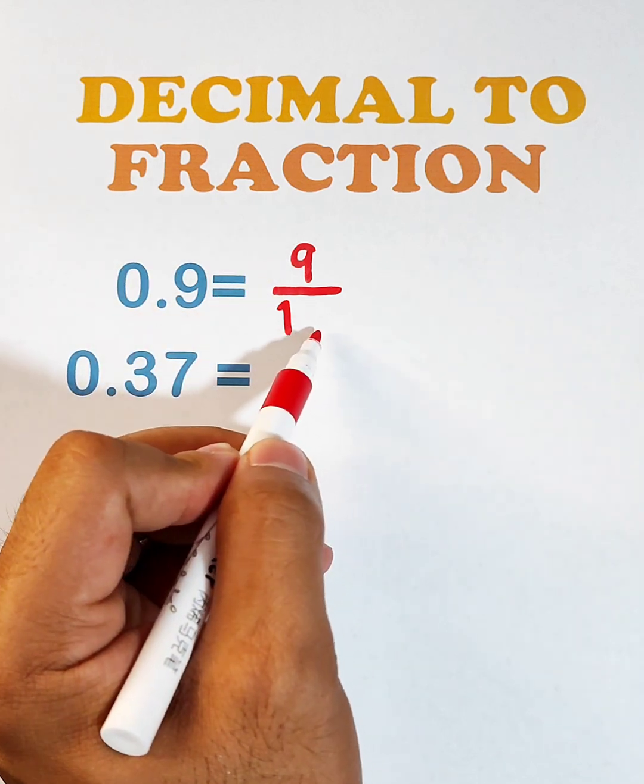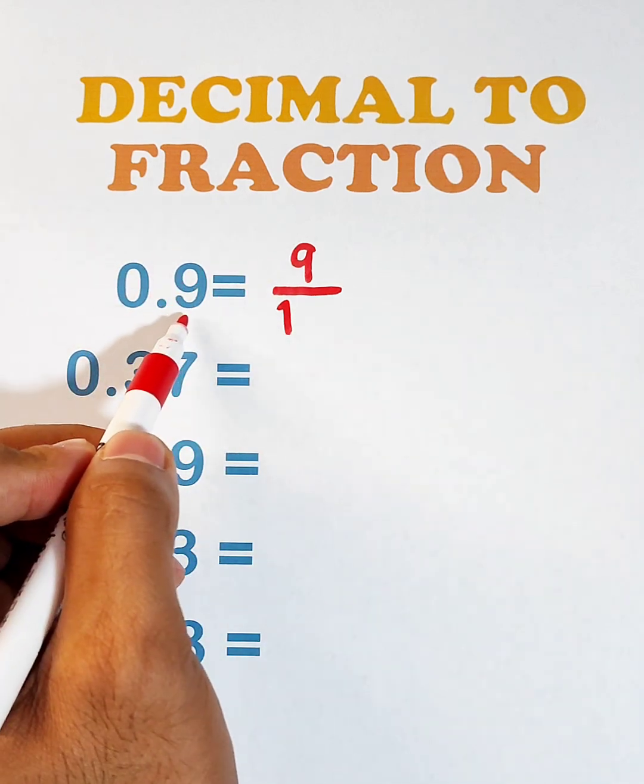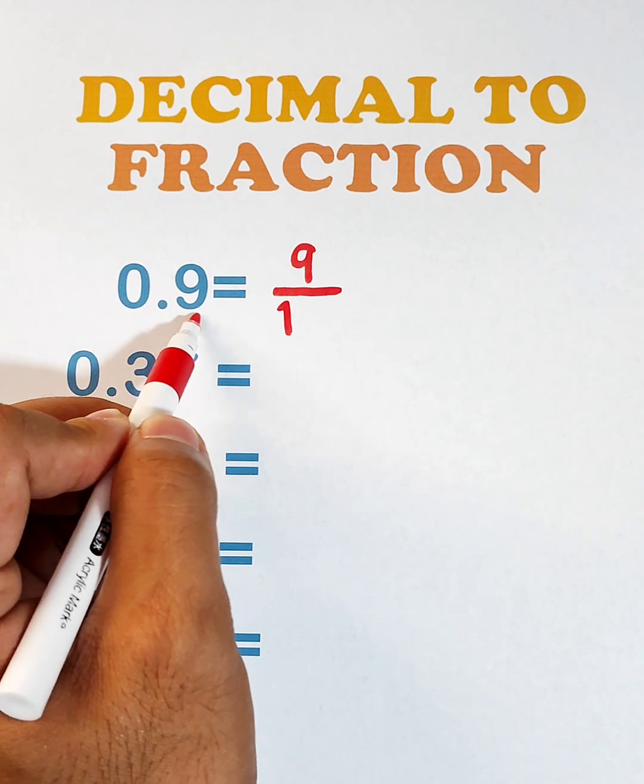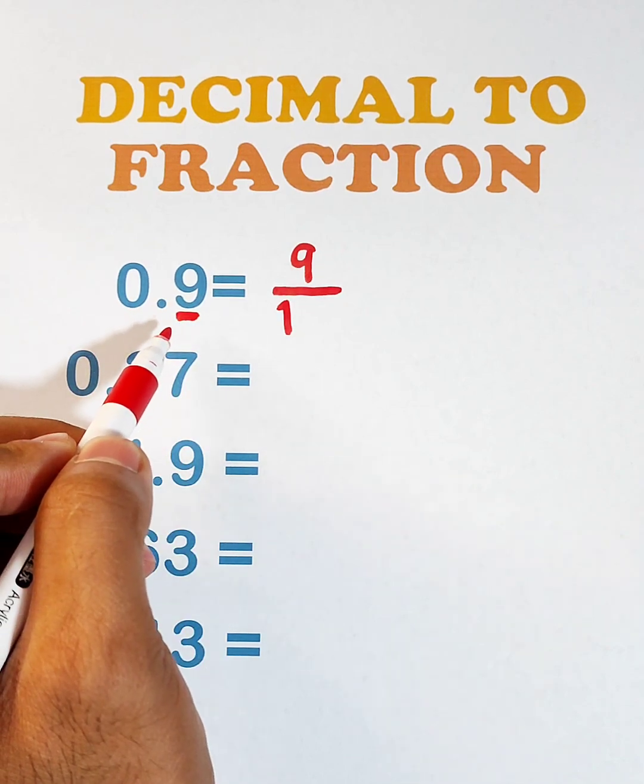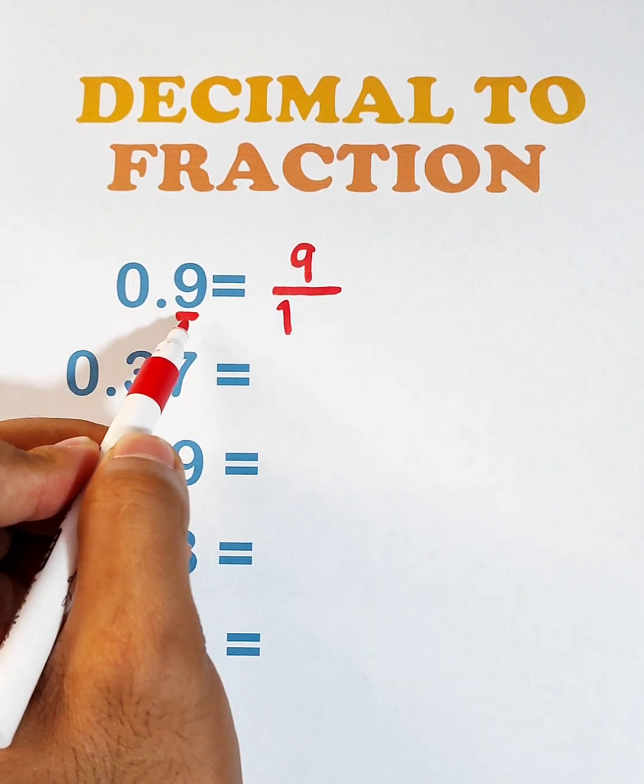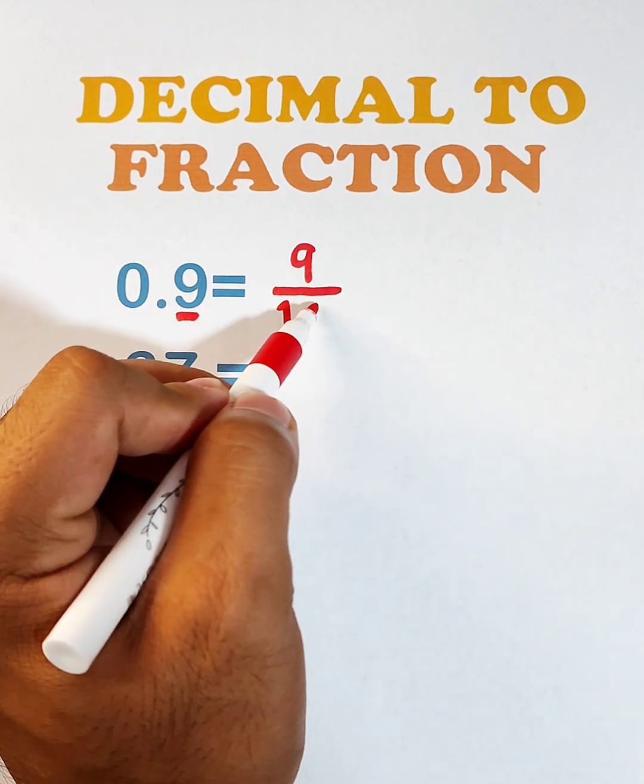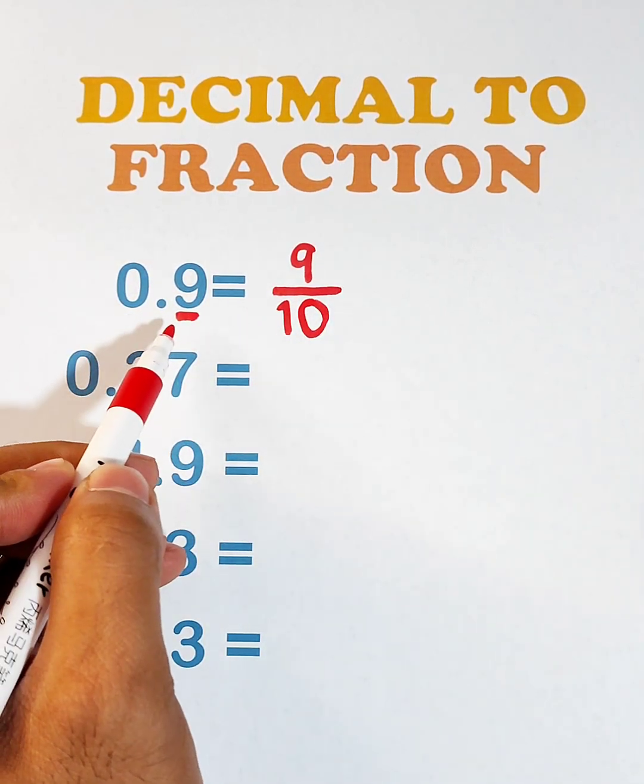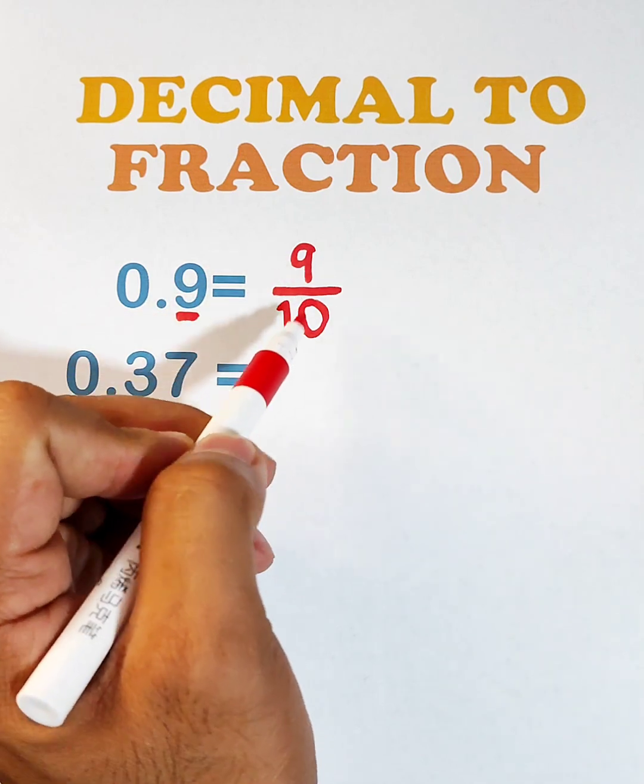And then as for this space, what we need to do is we will count the number of decimal places available in the given decimal. Here, we have 1 decimal place. So that counts as 1. So that is equivalent to 1, 0. And as you can see, the 0.9 is equal to the fraction 9 over 10.